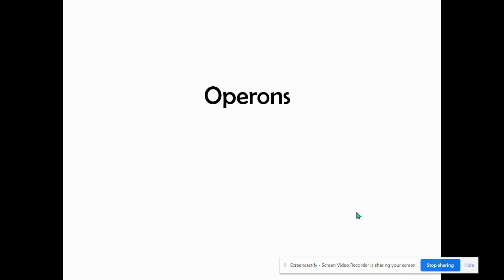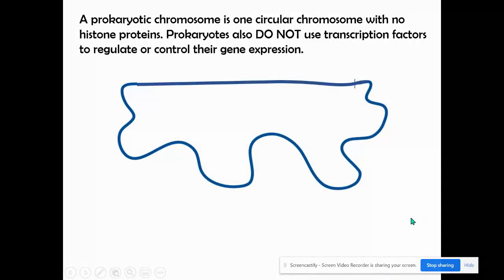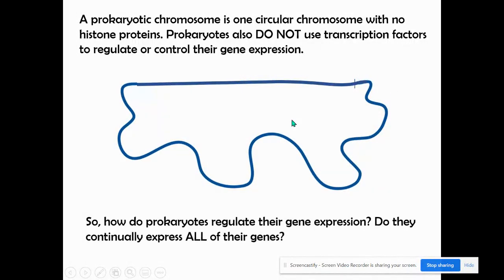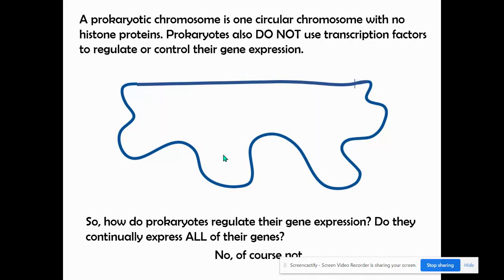In this video we're going to talk about repressible and inducible operons. Really, what it comes down to is operons are basically how prokaryotes regulate their gene expression. A prokaryotic chromosome is different from a eukaryotic chromosome because it's one circular chromosome. They do not have histone proteins, so there's no euchromatin or heterochromatin, and they do not use transcription factors like eukaryotes do. So how do they regulate gene expression? Do they continually express all of their genes all of the time? No, of course not — that would be wasteful and wasting resources.